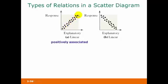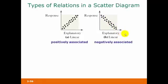In this graph on the right side, we can see somewhat of a straight line pattern, but it's going down as we go from left to right. So this would still show a linear relationship, but the two variables would be negatively associated.